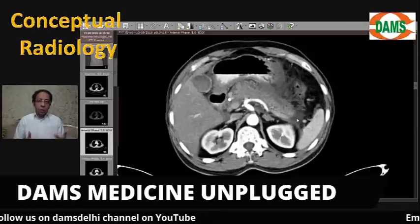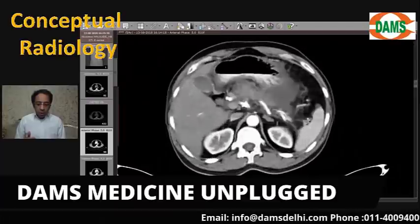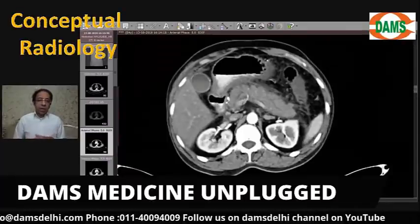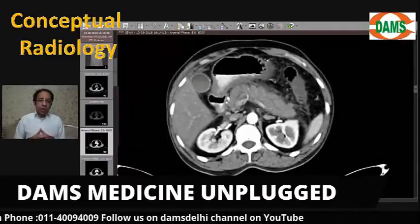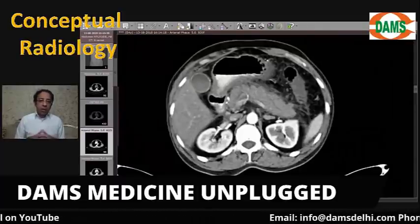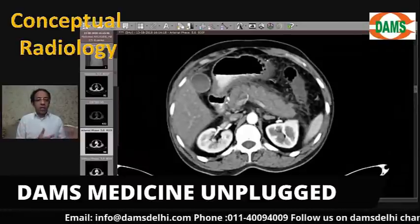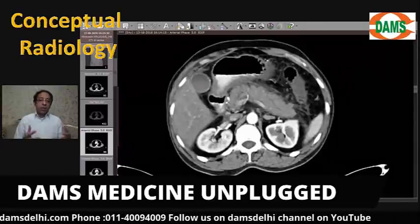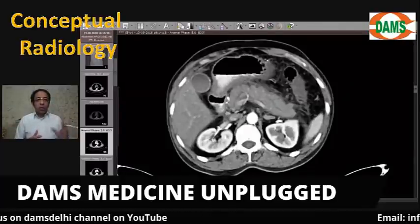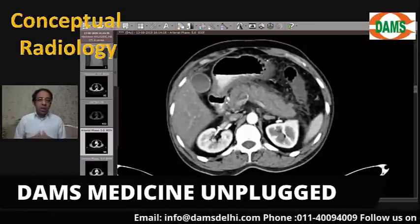To see necrosis we need contrast, which is why we are doing contrast-enhanced imaging here - necrosis can only be commented upon on a contrast-enhanced image. Keep in mind that radiology is not essential to make a diagnosis of pancreatitis. Clinically, pancreatitis is diagnosed when you have severe epigastric pain, elevation of amylase/lipase more than three times normal, and radiological evidence on CT or MRI. Any two of these three criteria being positive allows you to make the clinical diagnosis.